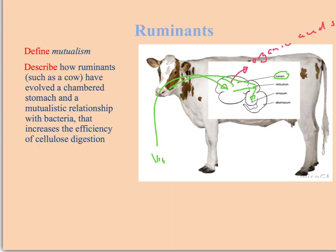Finally it passes into the fourth chamber called the abomasum, which is the true stomach, where all the protein-digesting enzymes are stored. The advantage of this system is that the rumen provides ideal conditions for the mutualistic bacteria and ensures they don't slip further down the gut and get digested themselves — although a few will, and they're quite a valuable source of protein. From the omasum it eventually passes into the small intestine, then the large intestine, and ends up as a cowpat.